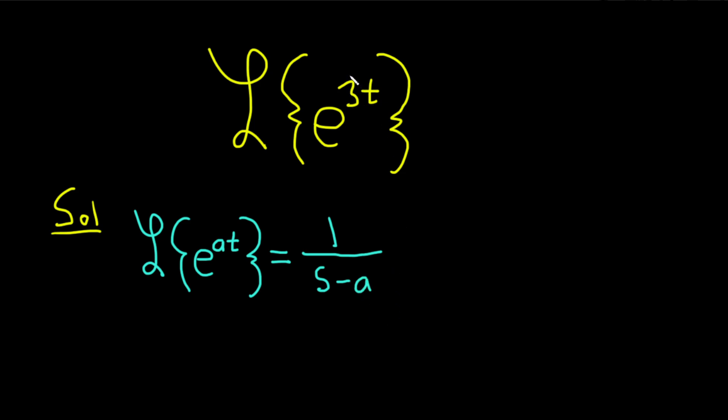In our case, a is 3. So using our formula, we have that the Laplace transform of e to the 3t, so our a is 3. This is equal to 1 over s minus 3.